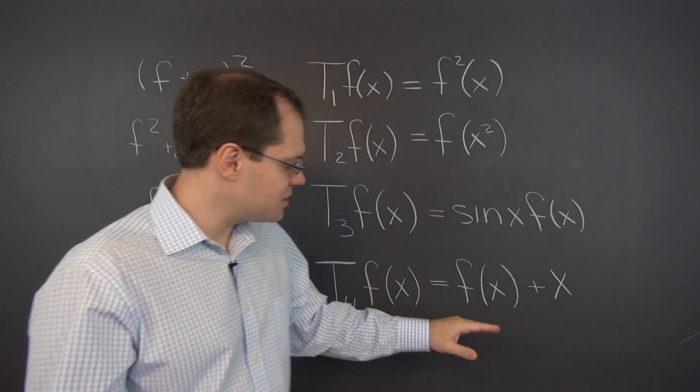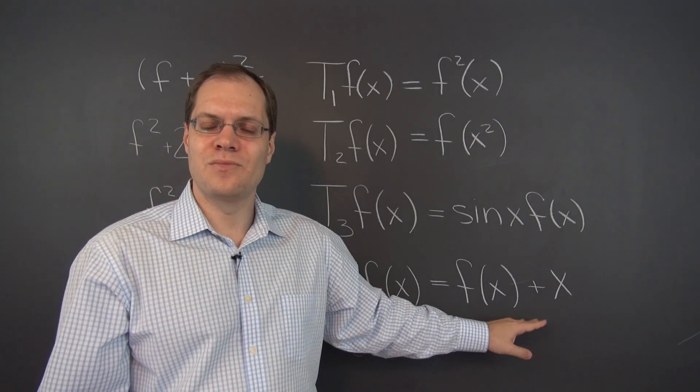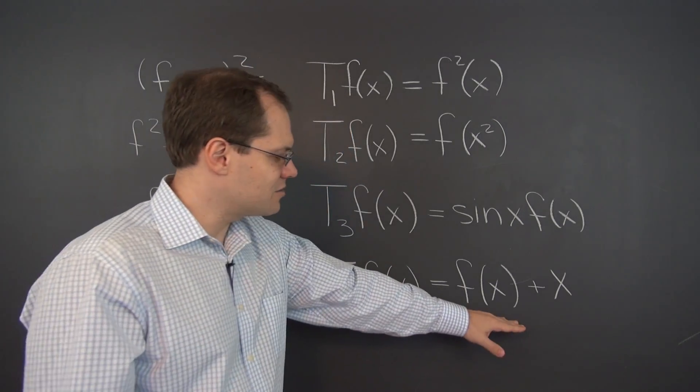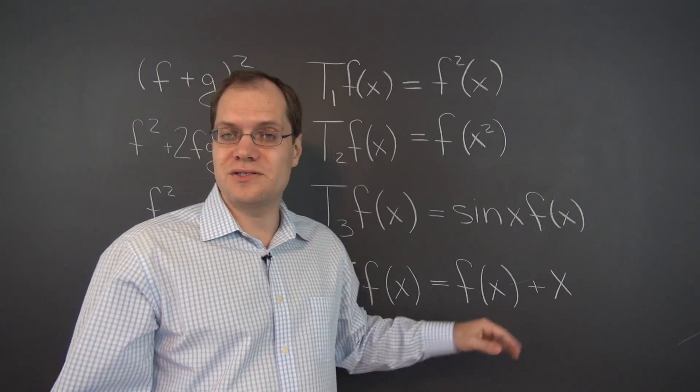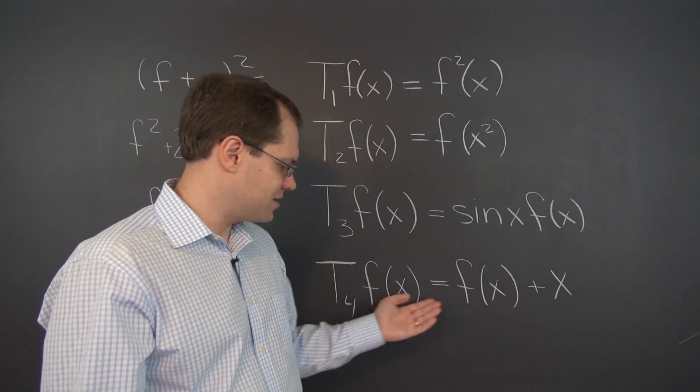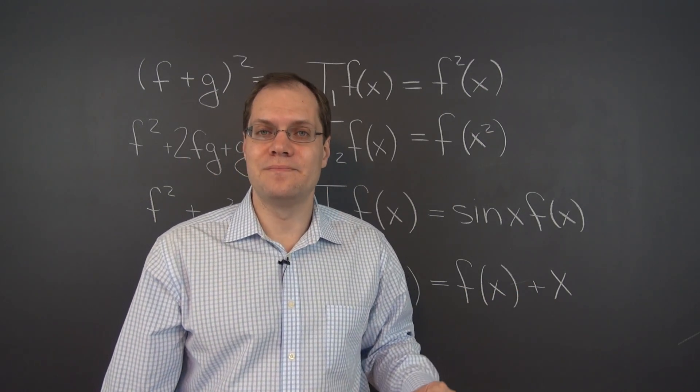So moving on to the last transformation where we add x to f of x, this might be the opposite. This actually looks very innocent. And your first instinct might be to say, well, that's linear, f of x, just itself, and then plus x. But it's not.